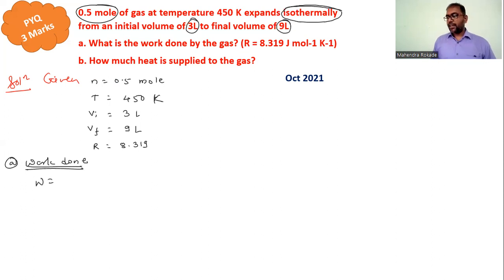Work done by a gas is given by formula nRT log of Vf divided by Vi. This log is log to the base e. Now generally we can use log to the base 10, so I will convert this log to the base e into log to the base 10, so I use here 2.303 nRT log base 10 Vf divided by Vi.